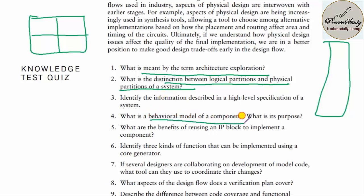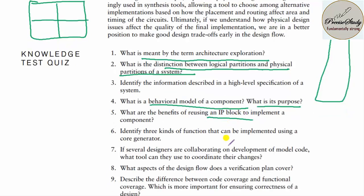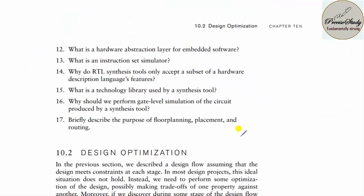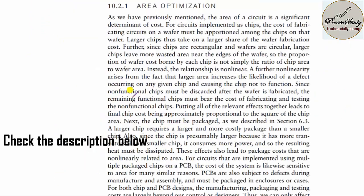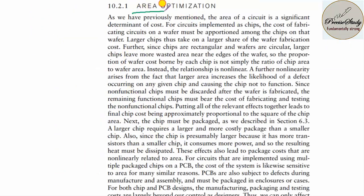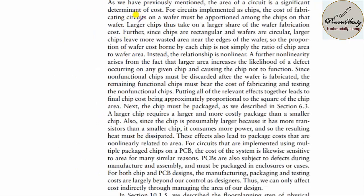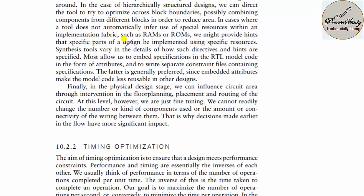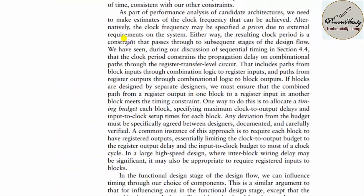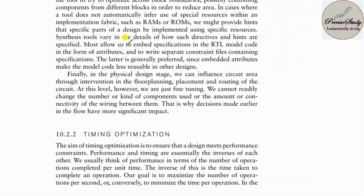What is the behavioral model of a component and what is its purpose? What do you mean by an IP and IP reuse? These are very important. What do you mean by code coverage? All these things are very important. In the case of design optimization, the first is area optimization, the second is timing optimization, and the third is power optimization.